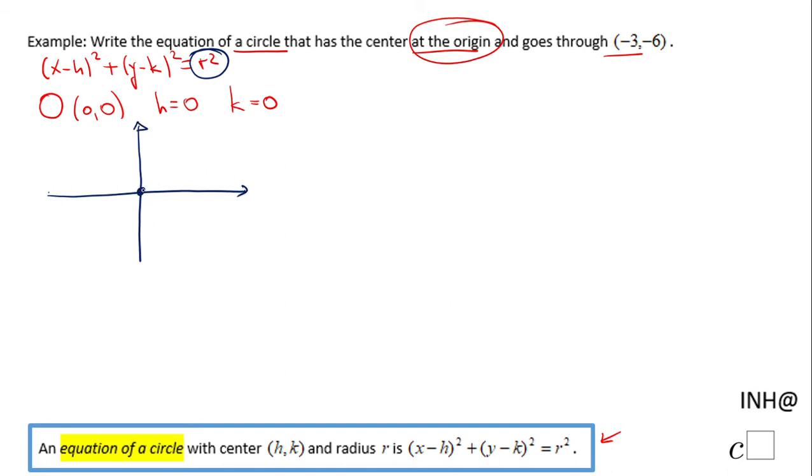So this is the center and goes through negative 3 and negative 6, which means 1, 2, 3 to the left, 1, 2, 3, 4, 5, 6. This is the other point. So basically this is the radius.